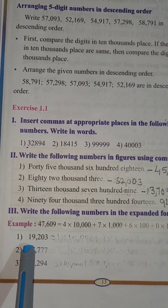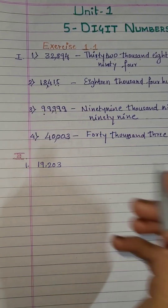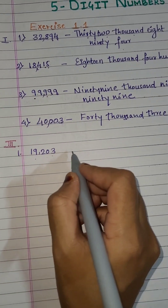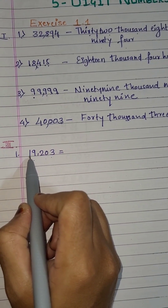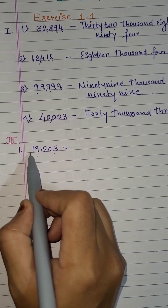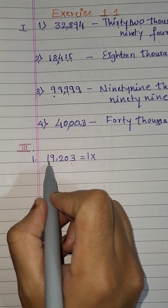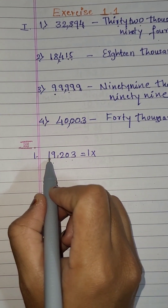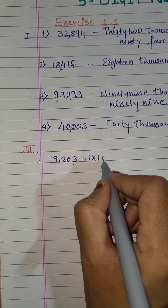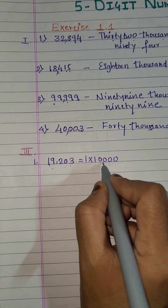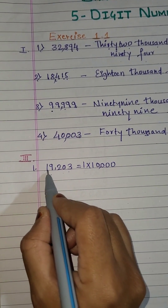Can you read this number? It is 19,203. So write this number here. Here it is: 19,203. So let's expand it. First you have to start from the number which is in the highest place. So 1 is in the 10,000 place. I will write 10,000 here. After 3 digits I mean after 100, you have to put the comma. Then we have finished with this one first. Now come to the second one.